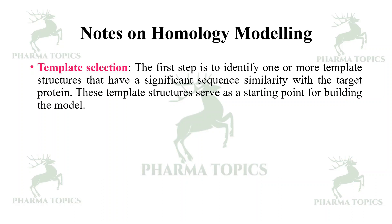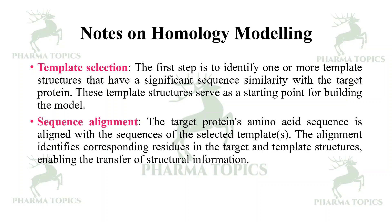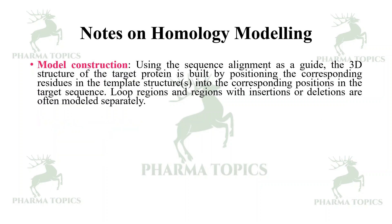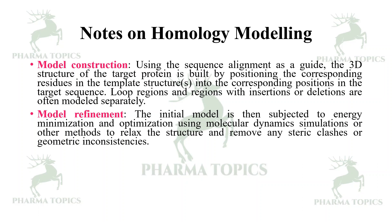The first step is template selection: identify one or more template structures that have significant sequence similarity with the target protein — these serve as a starting point for building the model. Next, sequence alignment: the target protein's amino acid sequence is aligned with the sequences of the selected templates, enabling transfer of structural information. Then model construction: using the sequence alignment as a guide, corresponding residues from the template structures are placed at the corresponding positions in the target sequence. Loop regions and regions with insertions or deletions are often modeled separately.